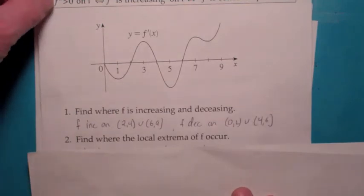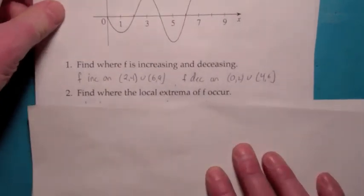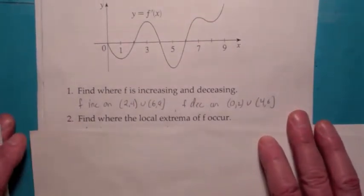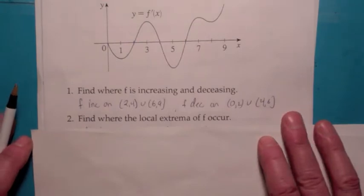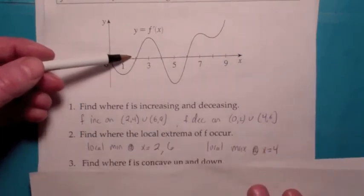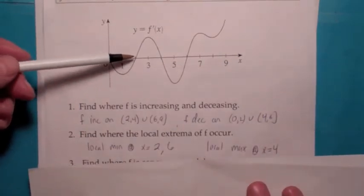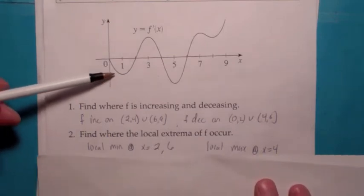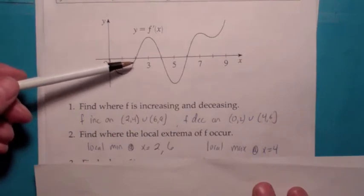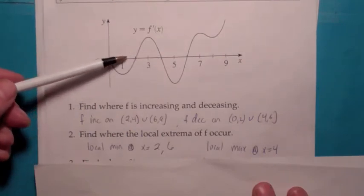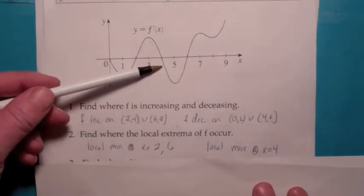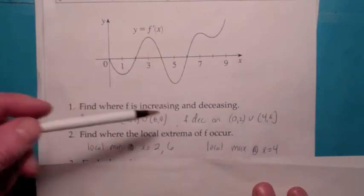Where do the local extrema of f occur? The derivative has to go from positive to negative or negative to positive — that sounds like an x-intercept. The x-intercepts of f prime have to actually cross. f prime is negative then positive at two, so that's a local min. There's also a local min at six. At four, f prime is positive then negative, so that's a local max.